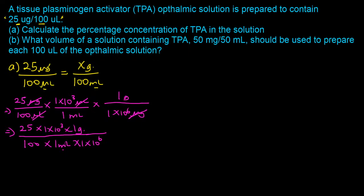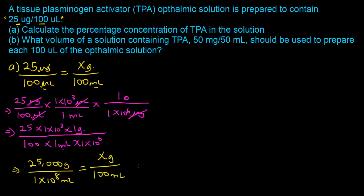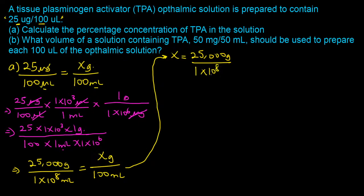We can now set up the proportion fresh with consistent units: 25,000 grams divided by 1×10⁸ milliliters equals x grams divided by 100 milliliters. Solving for x: x equals 25,000 grams divided by 1×10⁸ milliliters, times 100 milliliters. The milliliter units cancel, and we end up with 0.025 percent. That is the percentage strength for Part A.